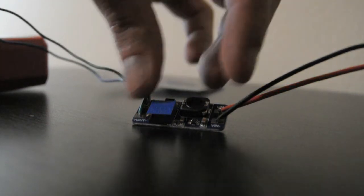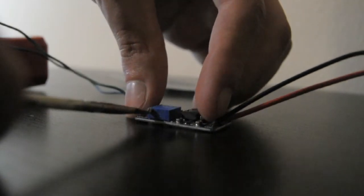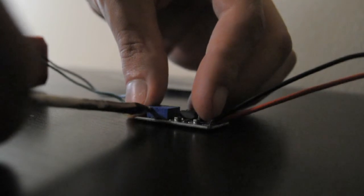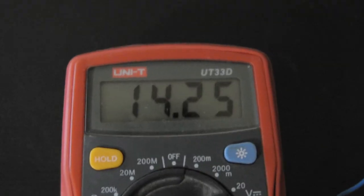After I finished connecting all the components I set the output to around 14V using the trim pot. The output can be anywhere from 5V to 28V.